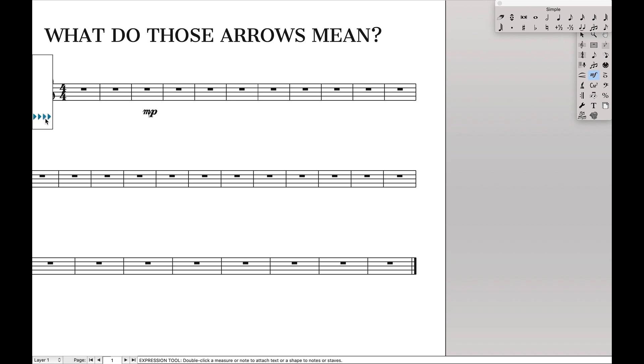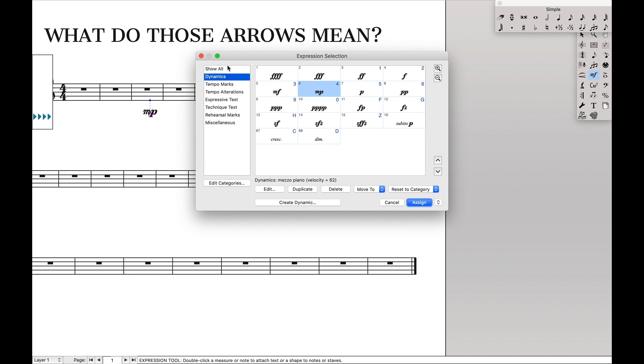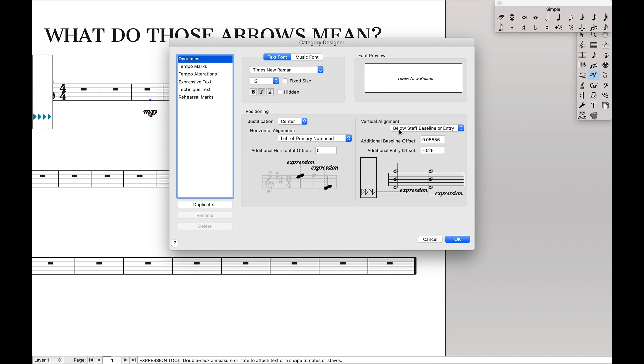So now here's what they do. They are setting the baseline for the document. So if we come over here to Edit Categories, we can see in the position that they're talking about below staff baseline or entry. That's what these arrows are, they're the baseline.